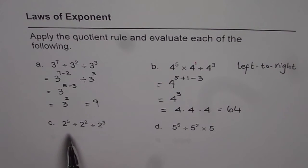I would like you to do these two questions on your own. 2 to the power of 5, divide by 2 square, divide by 2 cube. And 5 to the power of 5, divide by 5 square, times 5. Remember, you should always do from left to right.